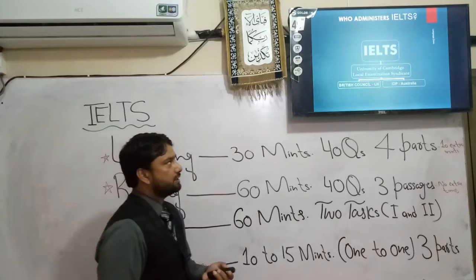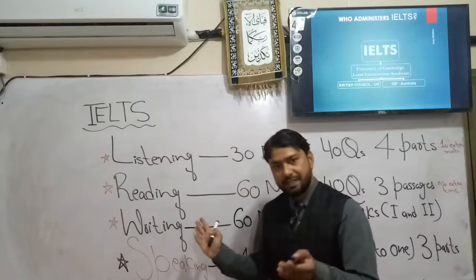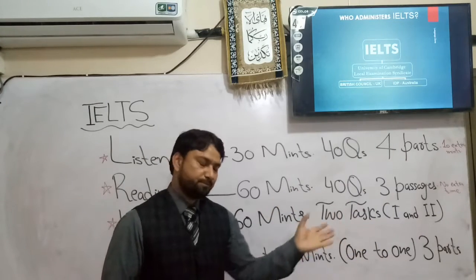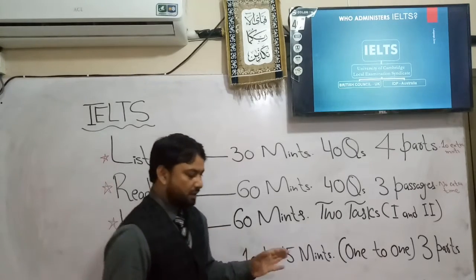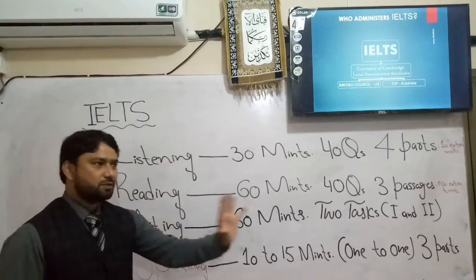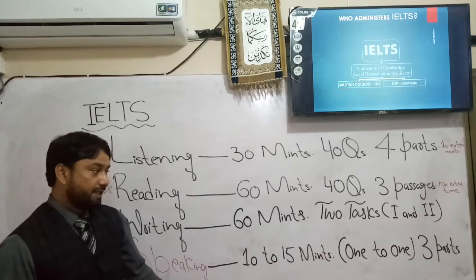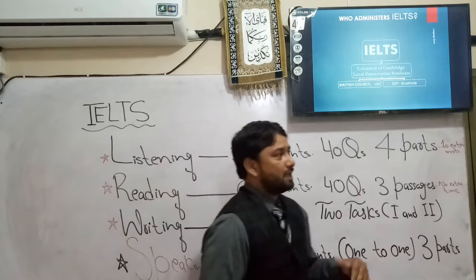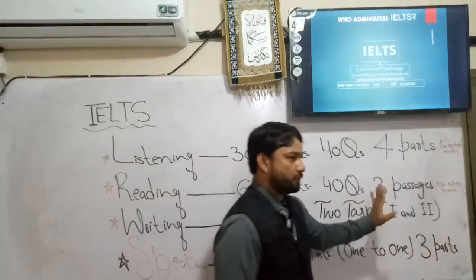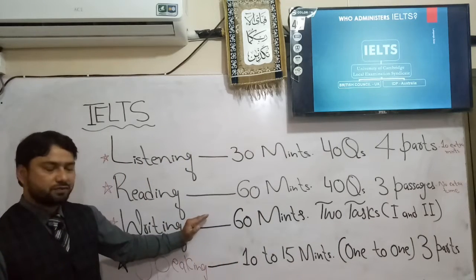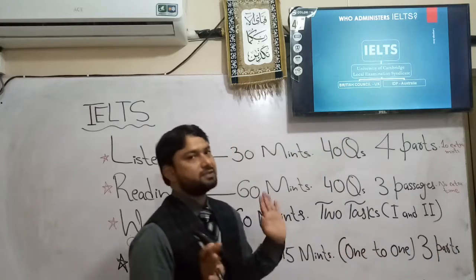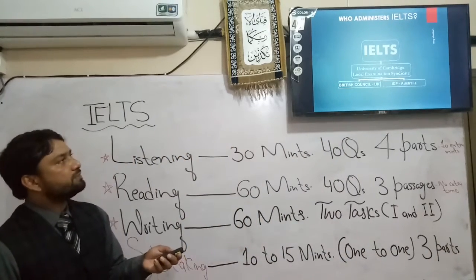Cambridge University controls the International English Language Testing System, whether you take the test through British Council, IDP, or IUB. There is a common rumor among students that British Council examiners don't give good scores in speaking, or that IDP reading passages are more difficult — but there is no difference between British Council and IDP as far as scoring criteria are concerned. Do not believe in these rumors.